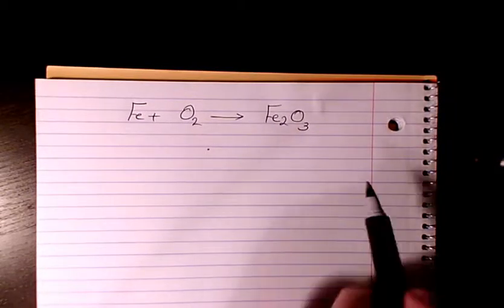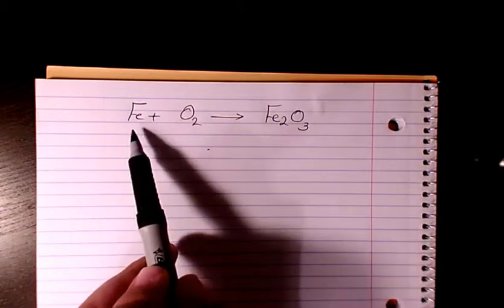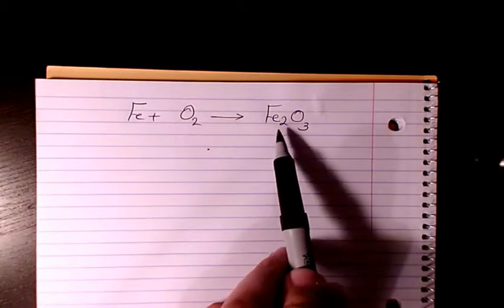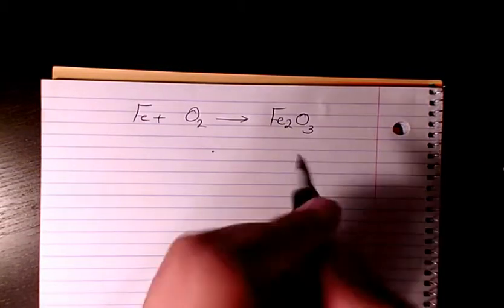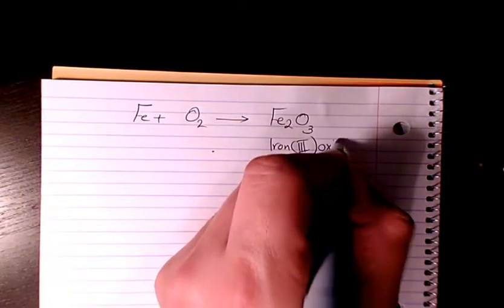What's up guys, this is Massey. Welcome to my channel. Today I want to balance this chemical equation. I have iron (Fe) and oxygen (O2), which gives you Fe2O3, which is iron(III) oxide, or you can say ferric oxide. Both of them are correct.